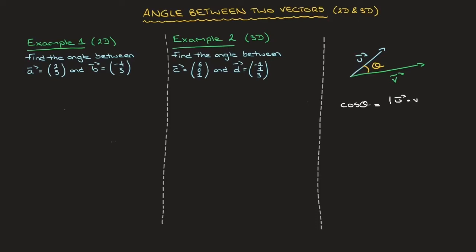That's u dot v, over the product of the magnitude of u and the magnitude of v. I'll go ahead and box that formula.